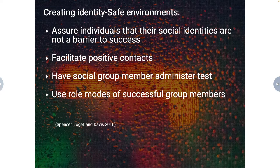Another thing we can do is create identity-safe environments. One of the main things we can do there is assure individuals that their identities are not a barrier to success. You can also facilitate positive contacts between students experiencing stereotype threat and members of the dominant group. If you can have a social group member administer a test — for example, when administering standardized tests, consider who administers it — that can help as well. And making sure you use role models showing successful members of the social identity group can be a great way to create an identity-safe environment.